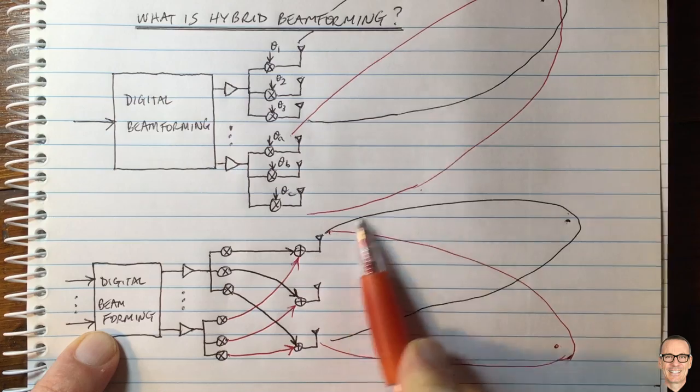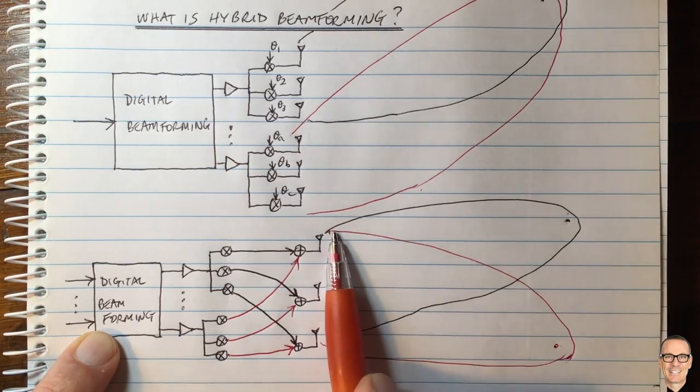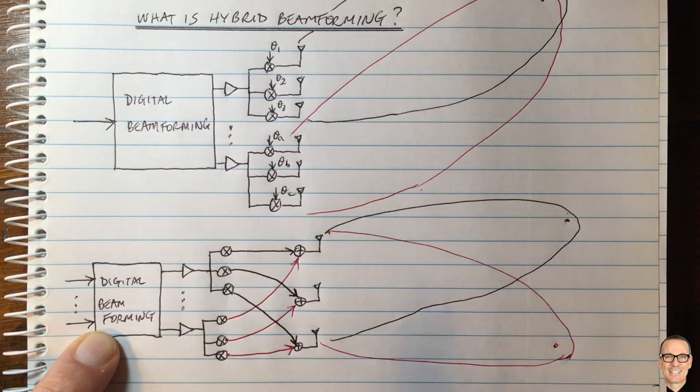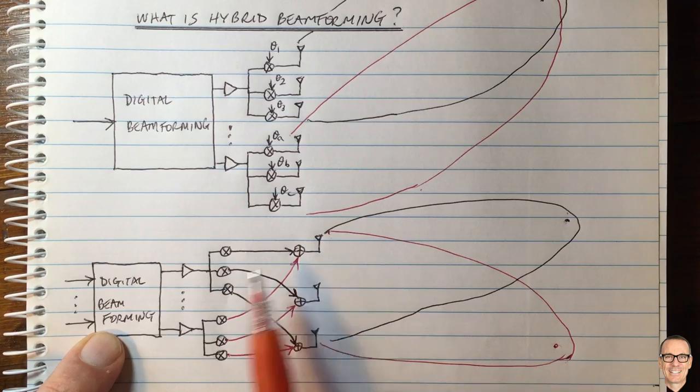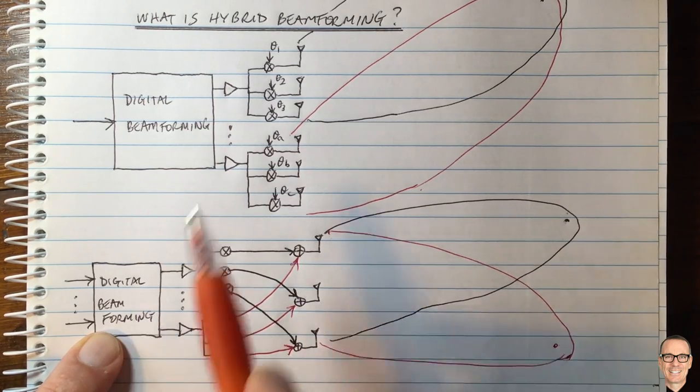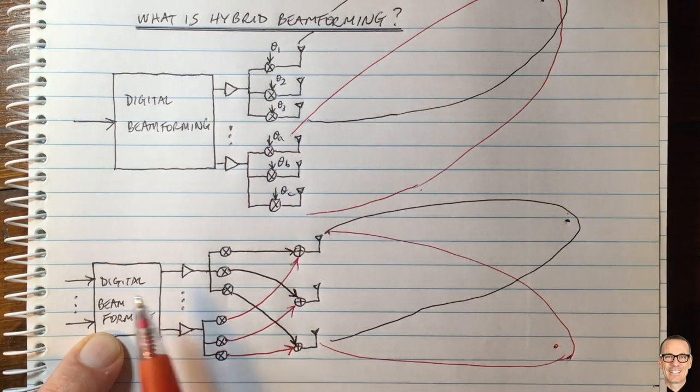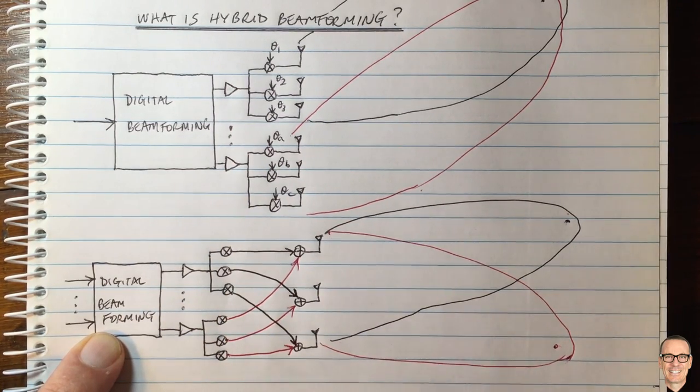So the analog beamforming can form these overall beams but you can't just make do solely with that beam shape, you need to modify that beam shape by doing digital beamforming where you're trying to steer nulls into the directions of the other users. So that's again the hybrid beamforming, the digital and the analog beamforming working together in this structure.